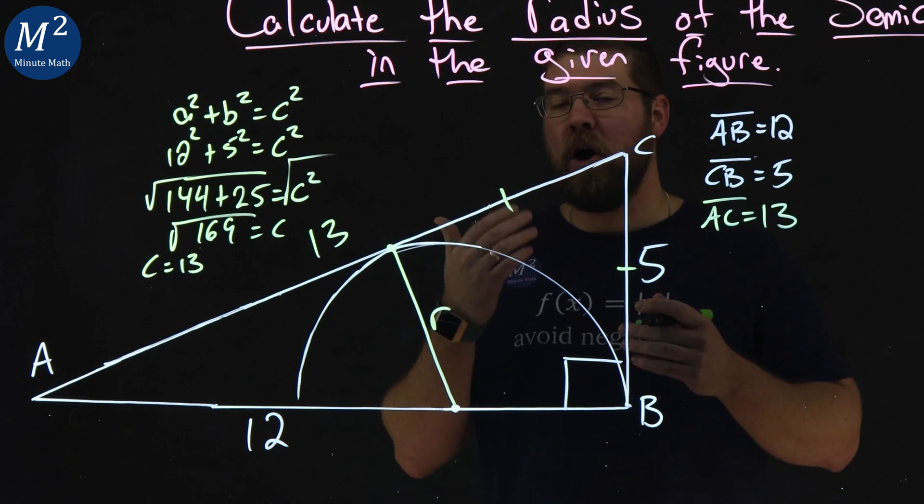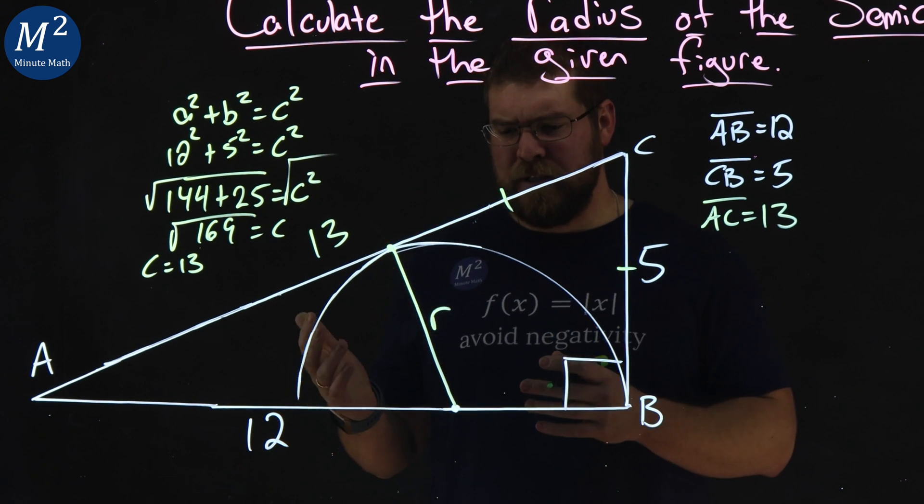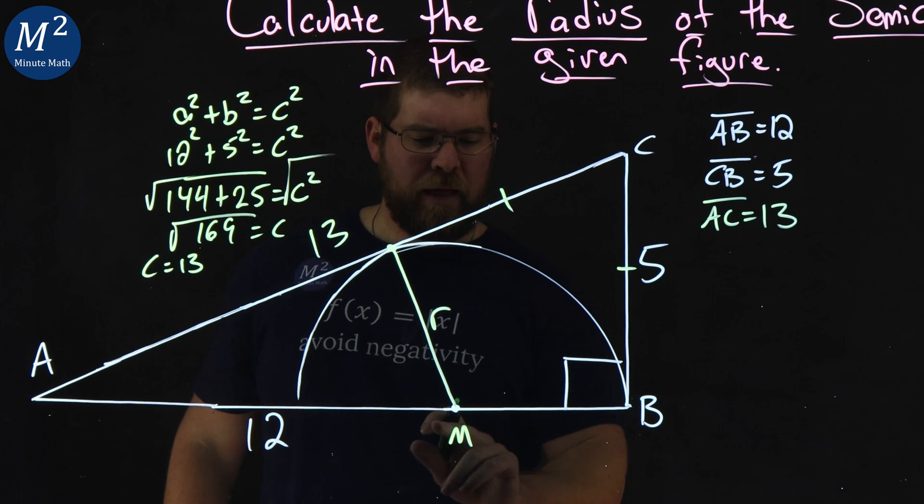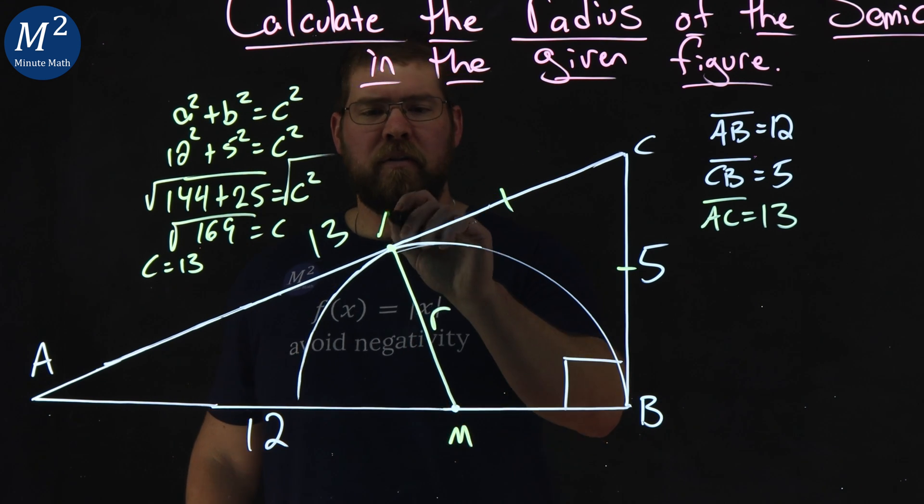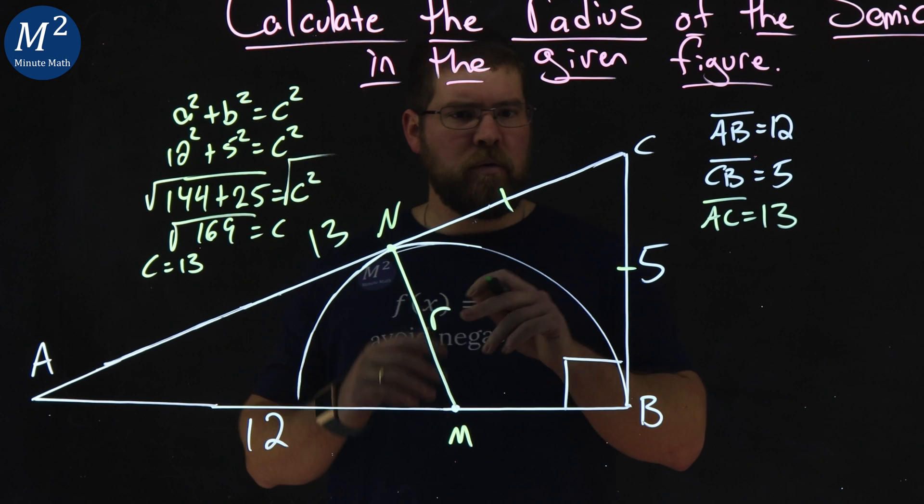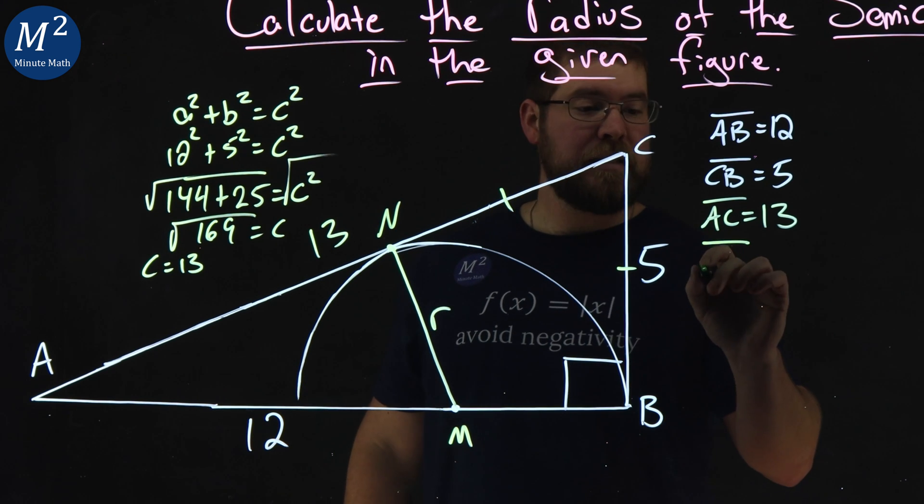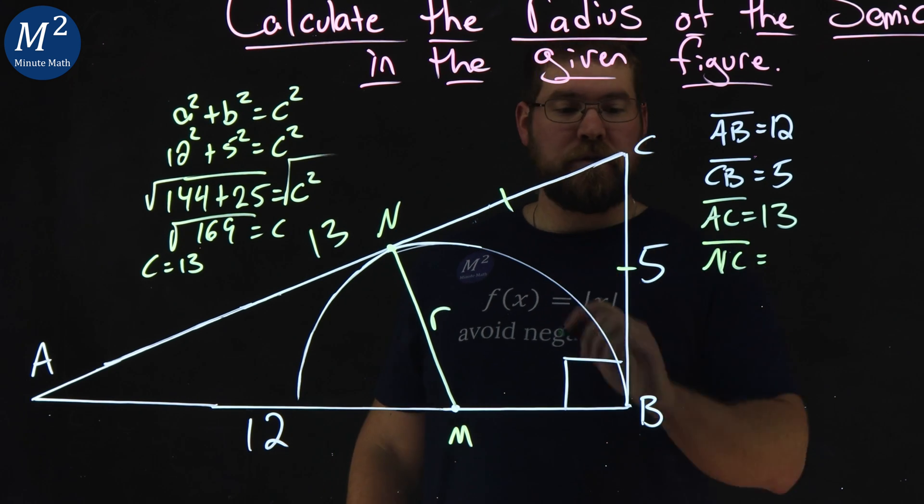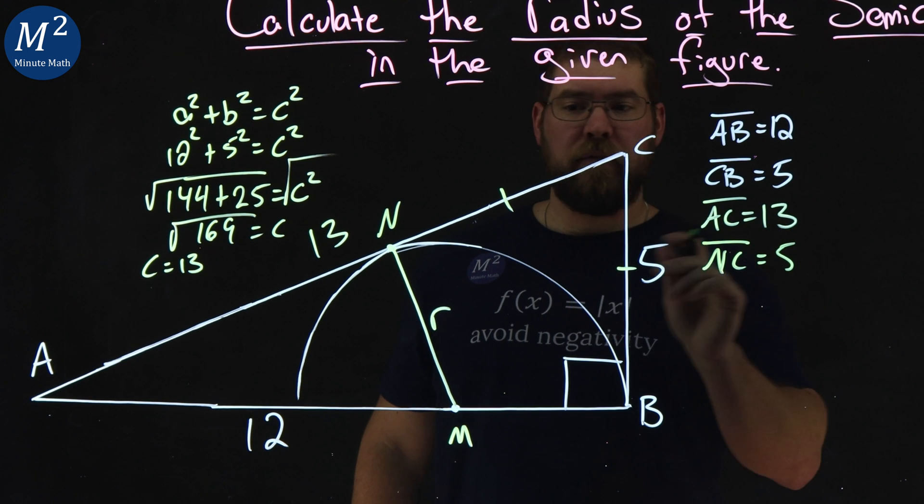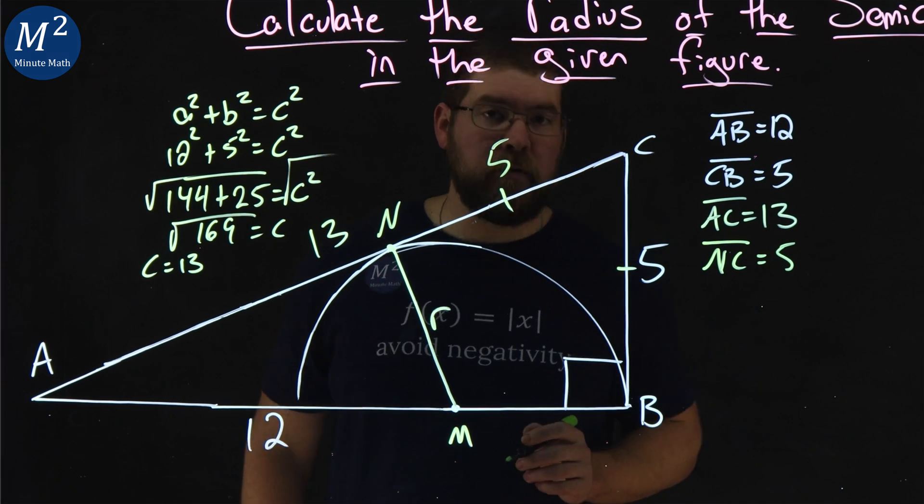So, this length and this length here are congruent. Let's give some labels here. Let's call this M, that point center, the semicircle, let's call this N. So, with that information, we can say that NC is equal to five, right? If they're congruent, we have five here.